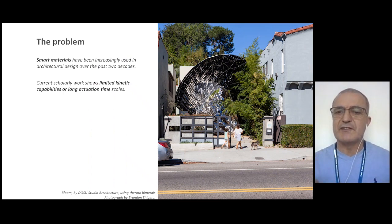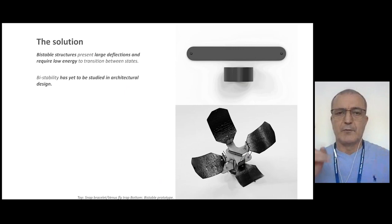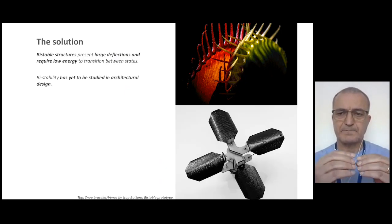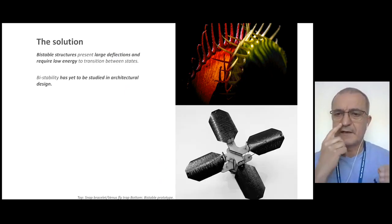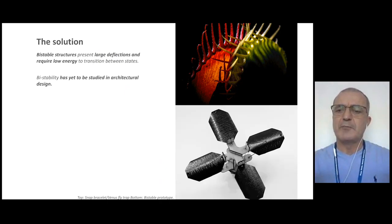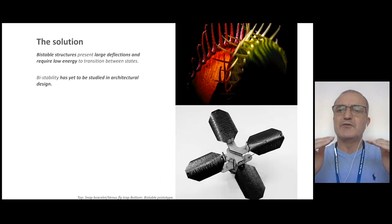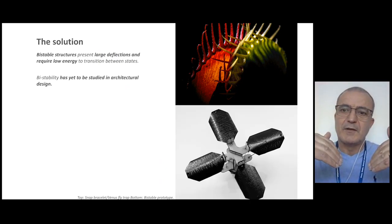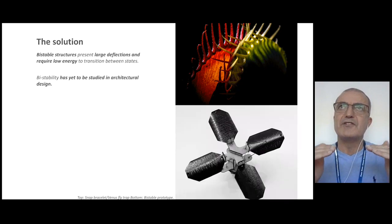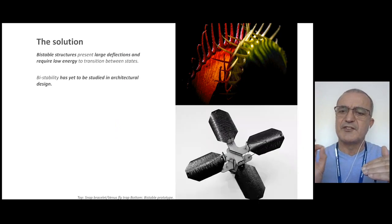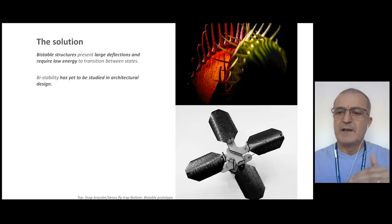What we are doing is using smart materials to avoid mechanical systems. The idea is to use materials that can change their shape, avoiding mechanical systems. We have been working with bistable systems — structures that have two stable positions. You only need a small input of energy to make the system transition from one shape to the other. We are also using smart materials to activate the bistable elements.